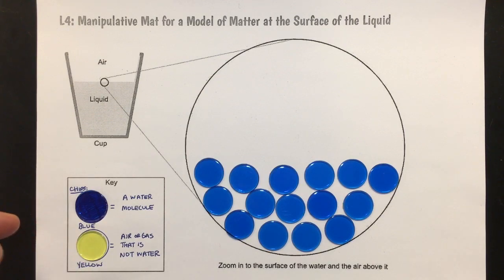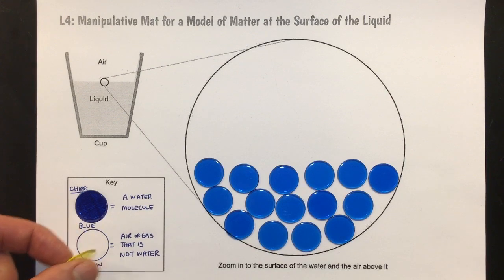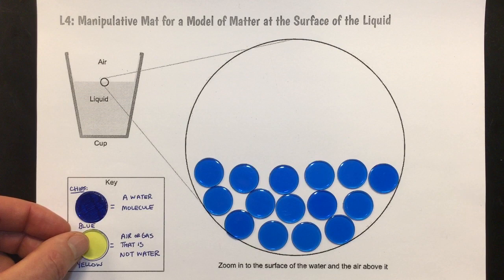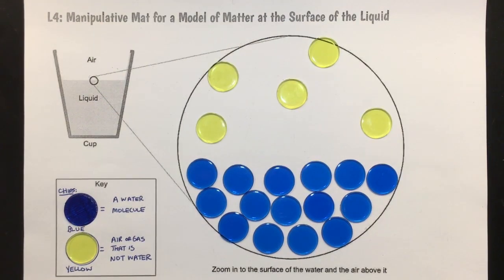These yellow chips will represent air or any other type of substance that is in the gas. If we don't have blue chips or yellow chips, we'll just let an empty circle instead of a filled-in circle represent the air or the gas that is not made out of water. How can we use these chips to show why the mass of the system and the level of water start slowly dropping over time?